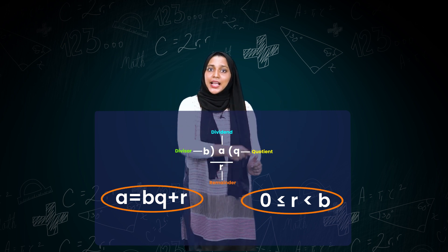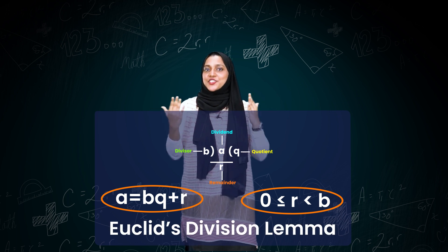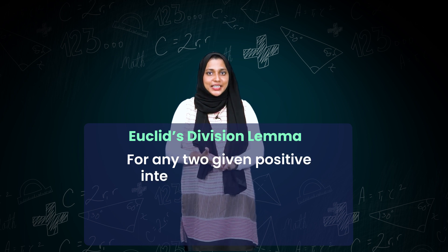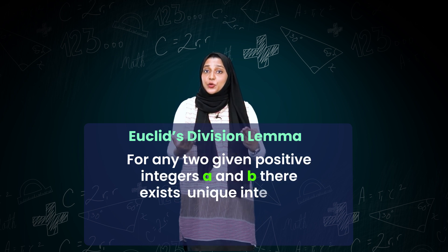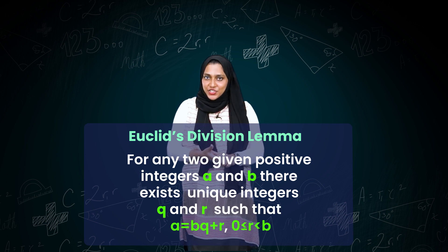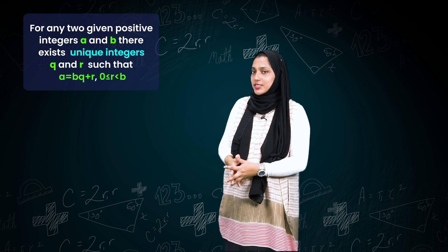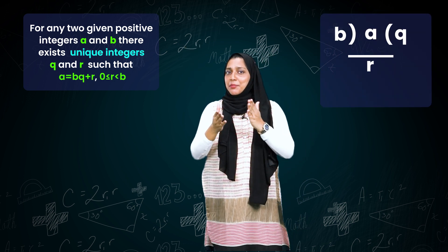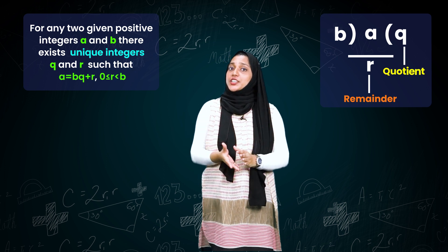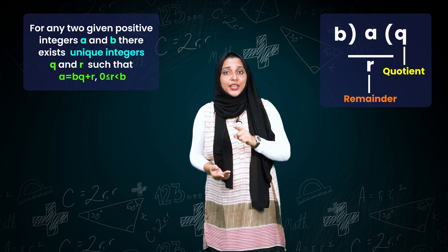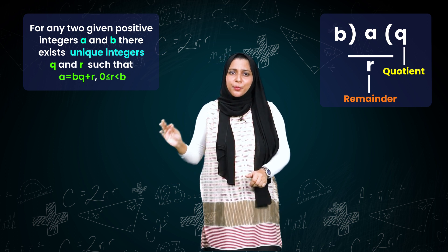Therefore, when you combine this, this is nothing but Euclid's division lemma. It states that for any two given positive integers A and B, there exists a unique integer Q and R such that A equal to BQ plus R, where R lies between 0 and B. Now, in this statement, notice the term 'unique integers.' What does this mean? The remainder and quotient you get through A and B can never be the same for different values. That is why 'unique integers.' This is a very important statement.